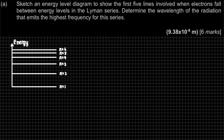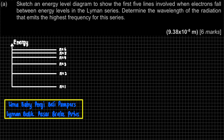The question asks for the first 5 lines involved when electrons fall in the Lyman series. You have to memorize the ground state for each series. A mnemonic to remember: 'Lyman balik pasar berik putus' — Lyman's ground state is N equal to 1, Balmer is N=2, Paschen is N=3, Brackett is N=4, Pfund is N=5. For the Lyman series, our ground state must be N equal to 1, meaning the electrons fall to N equal to 1.